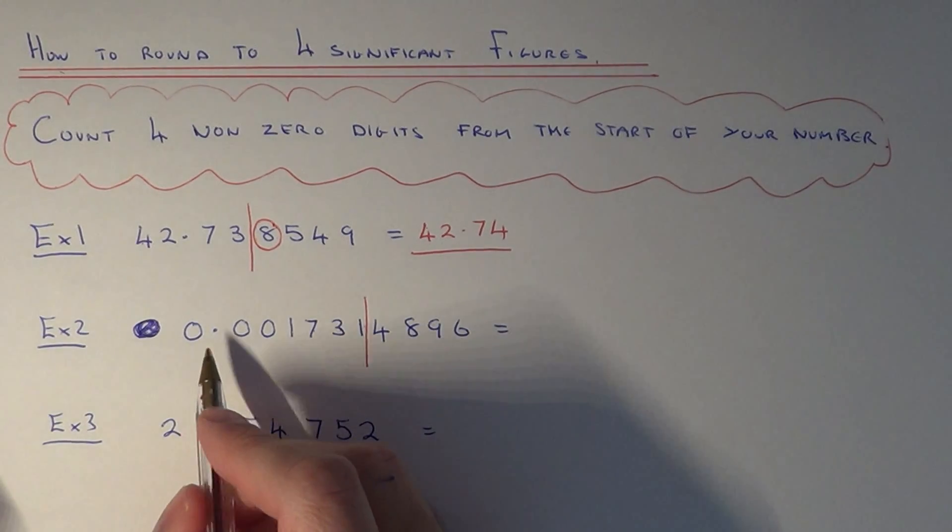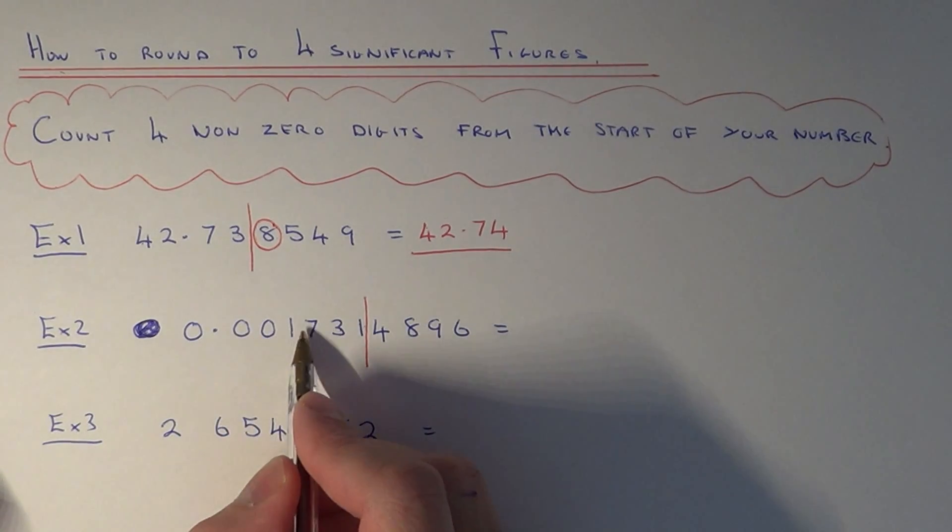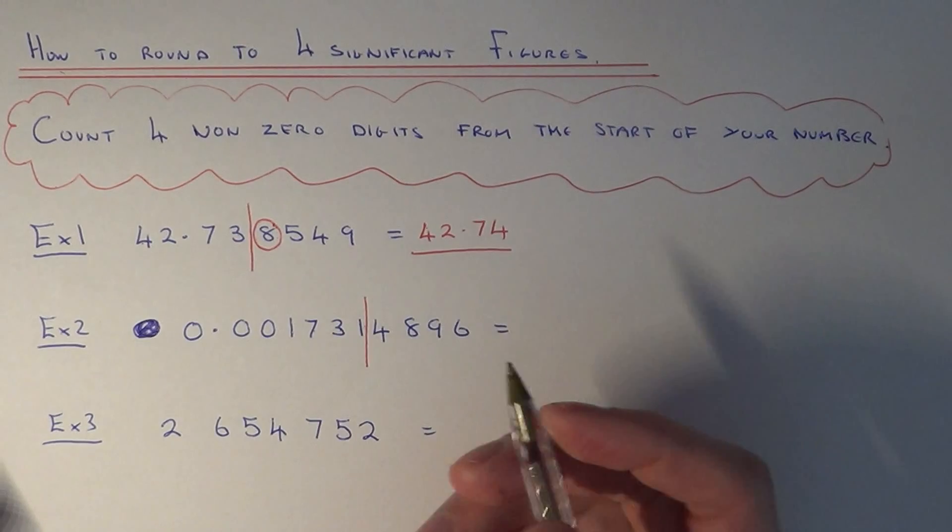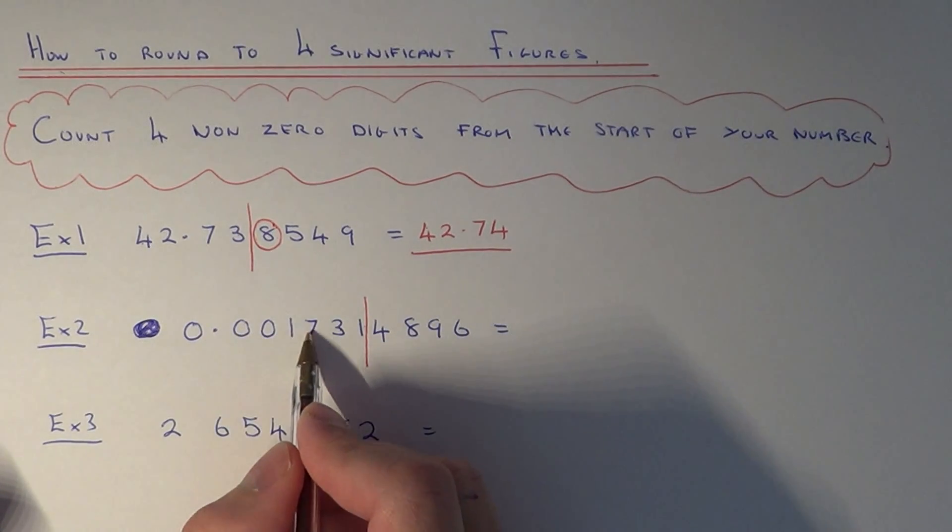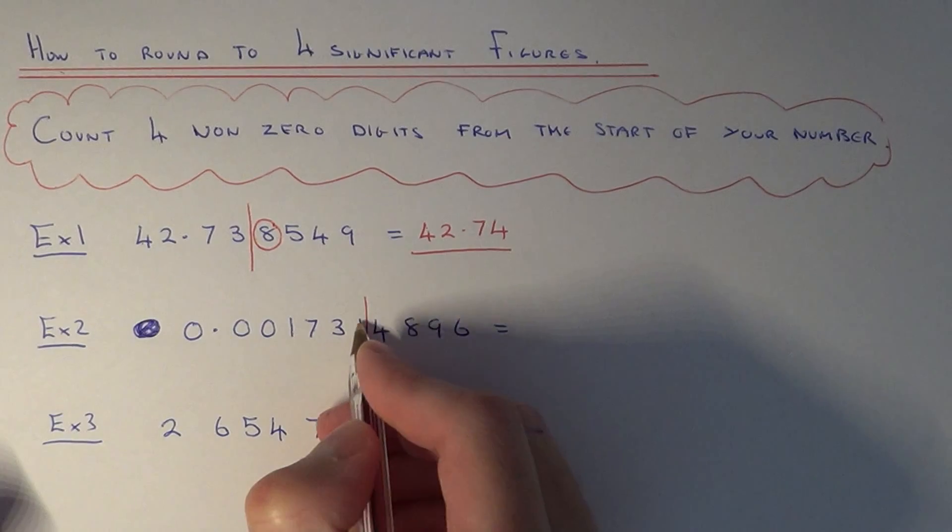Our two possible choices are 0.001731, that's if I round it down, or if I round it up it would be 0.001732. We just add one on to this digit here.